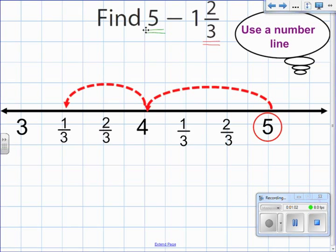Just subtracting the 2 thirds, that leaves us at 3 and 1 third as my answer, or 5 minus 1 and 2 thirds. To check your answer you can always add 3 and 1 third plus 1 and 2 thirds and that'll get you back to 5.